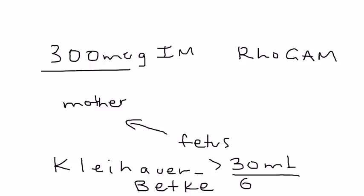Let's just say there was 60 mLs of blood that went from the fetus to the mother during pregnancy, then you'd probably give 600 mcg of RhoGAM. So a very important test.